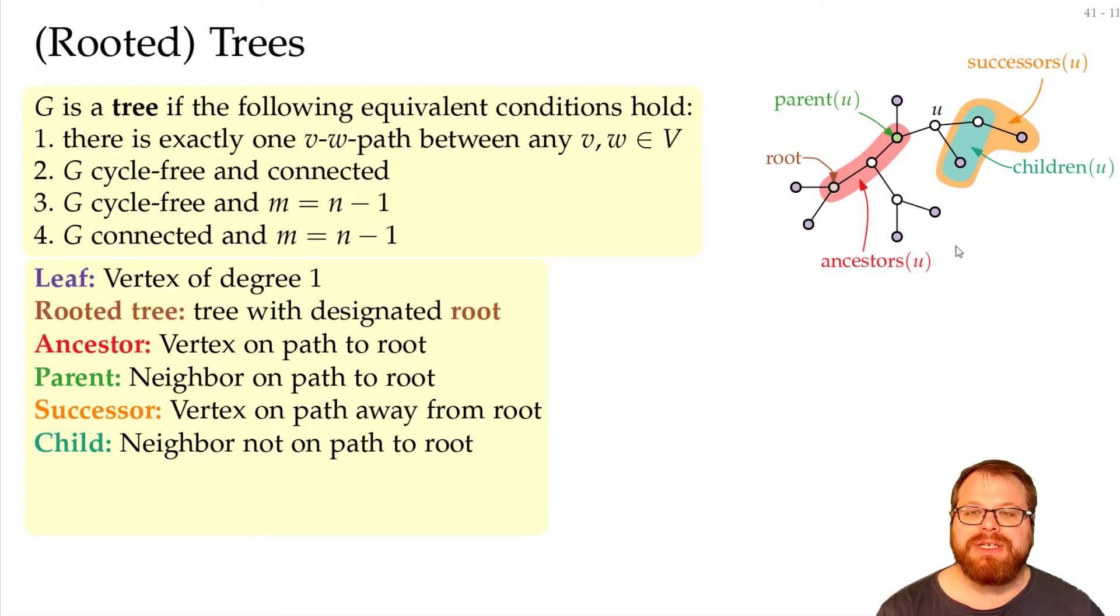So you can imagine all these definitions like a family tree. You have the parent, you have the children, ancestors, successors. And there's also the siblings. For example, this here would be a sibling, because they have the same parent.